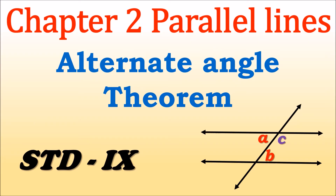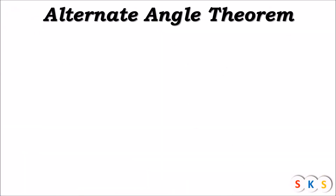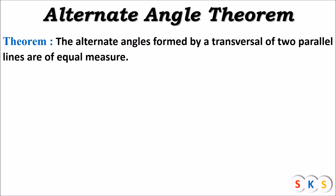Dear students, today we will see chapter number two: Parallel Lines. In this chapter we are going to learn about the Alternate Angle Theorem. Let's start. The statement of this theorem is: the alternate angles formed by a transversal of two parallel lines are of equal measures.